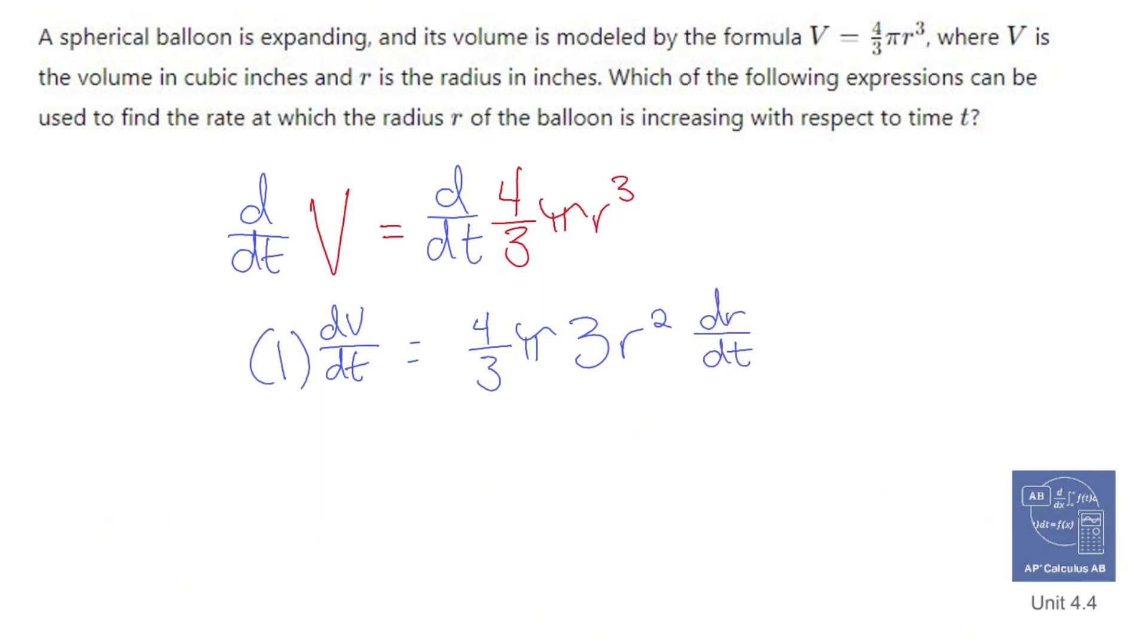So the nice thing is the threes are going to cancel out. The one doesn't really need to be there. And you have dV dt equals four pi r squared dr dt.